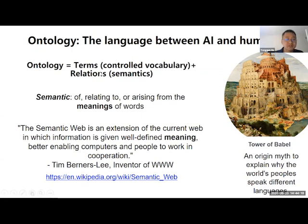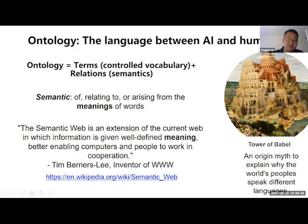Ontology is basically terms plus relations—we call those semantic relations. Tim Berners-Lee, the inventor of the internet, said the semantic web is an extended form of the web where information is given well-defined meaning, and ontology is the key to that well-defined meaning. It's the next level of AI.